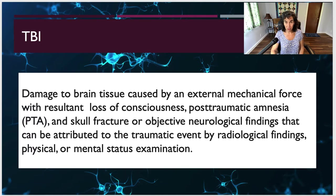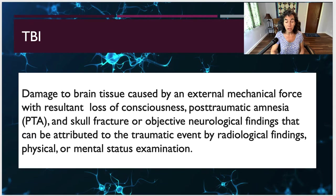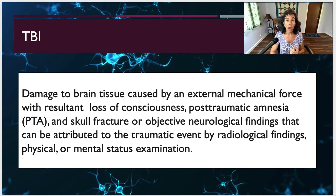What is a traumatic brain injury? It's defined as damage to the brain tissue caused by an external mechanical force, with resultant loss of consciousness, post-traumatic amnesia or PTA, and skull fracture or objective neurological findings that can be attributed to the traumatic event by radiological findings, physical or mental status examination. My suggestion is that you download the PowerPoint slide deck and spend some time with this definition, as we'll be going over the parts and pieces of it.